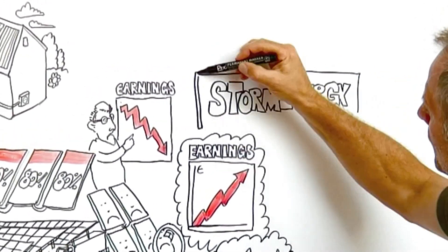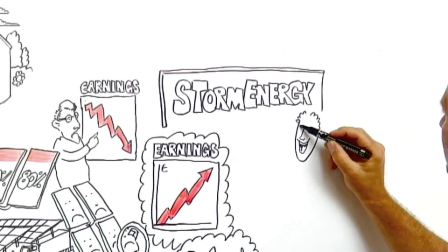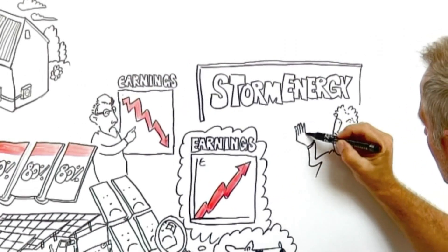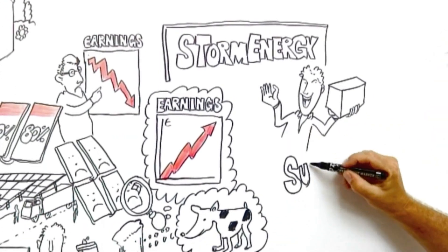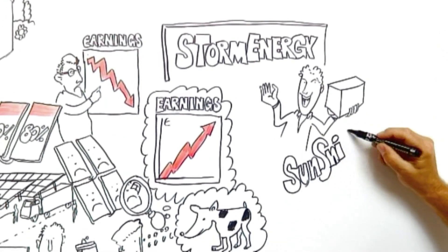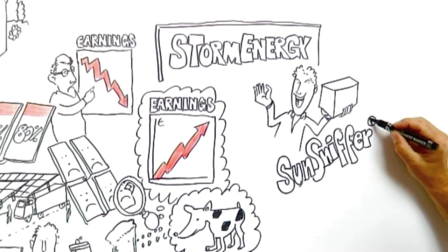Now comes the best part. This sniffing animal already exists. At Storm Energy, they invented the sun sniffer. Since this invention, problems can be solved instantly after they arise.